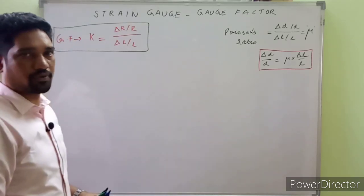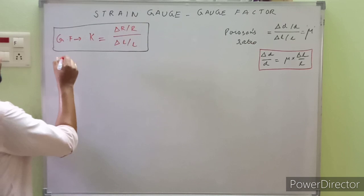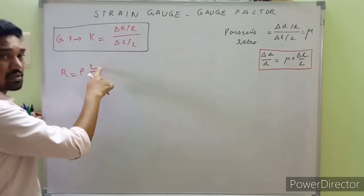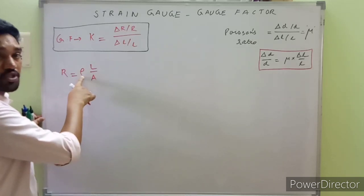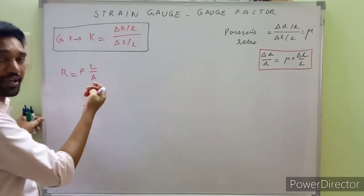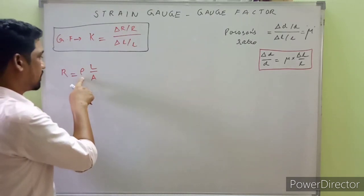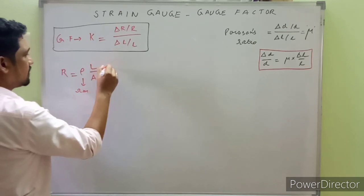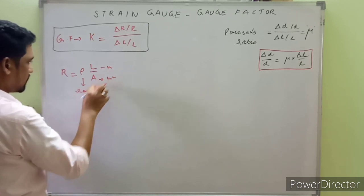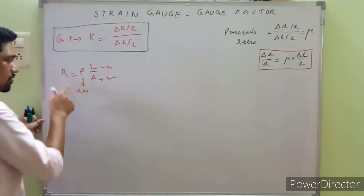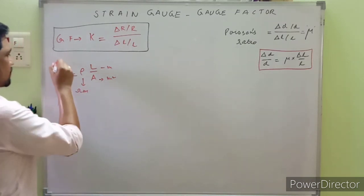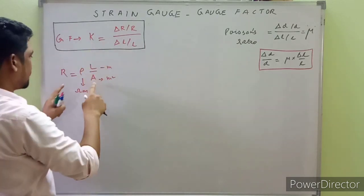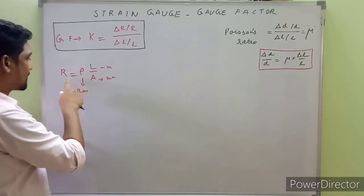Recollect the expression for resistance of a metal wire: R = ρL/A, where the resistance is directly proportional to the length and inversely proportional to the cross-sectional area. Here, ρ is the specific resistance of the metal wire, given in ohm-meters. The units work out: ohm-meter × meter / meter² = ohm.